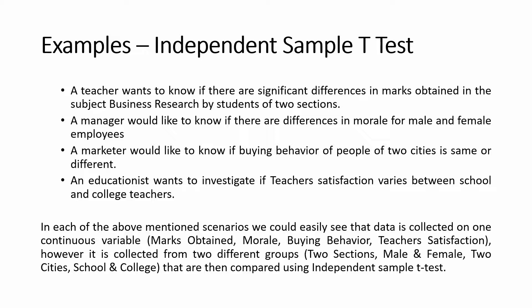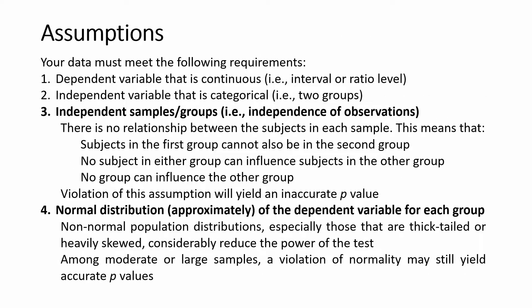Here are a few assumptions to note before running an independent sample t-test. Your dependent variable should be continuous, that is on an interval or ratio scale. Your independent variable should be categorical, having two groups such as male or female, school or college. Your samples or groups must be independent, meaning independence of observation.